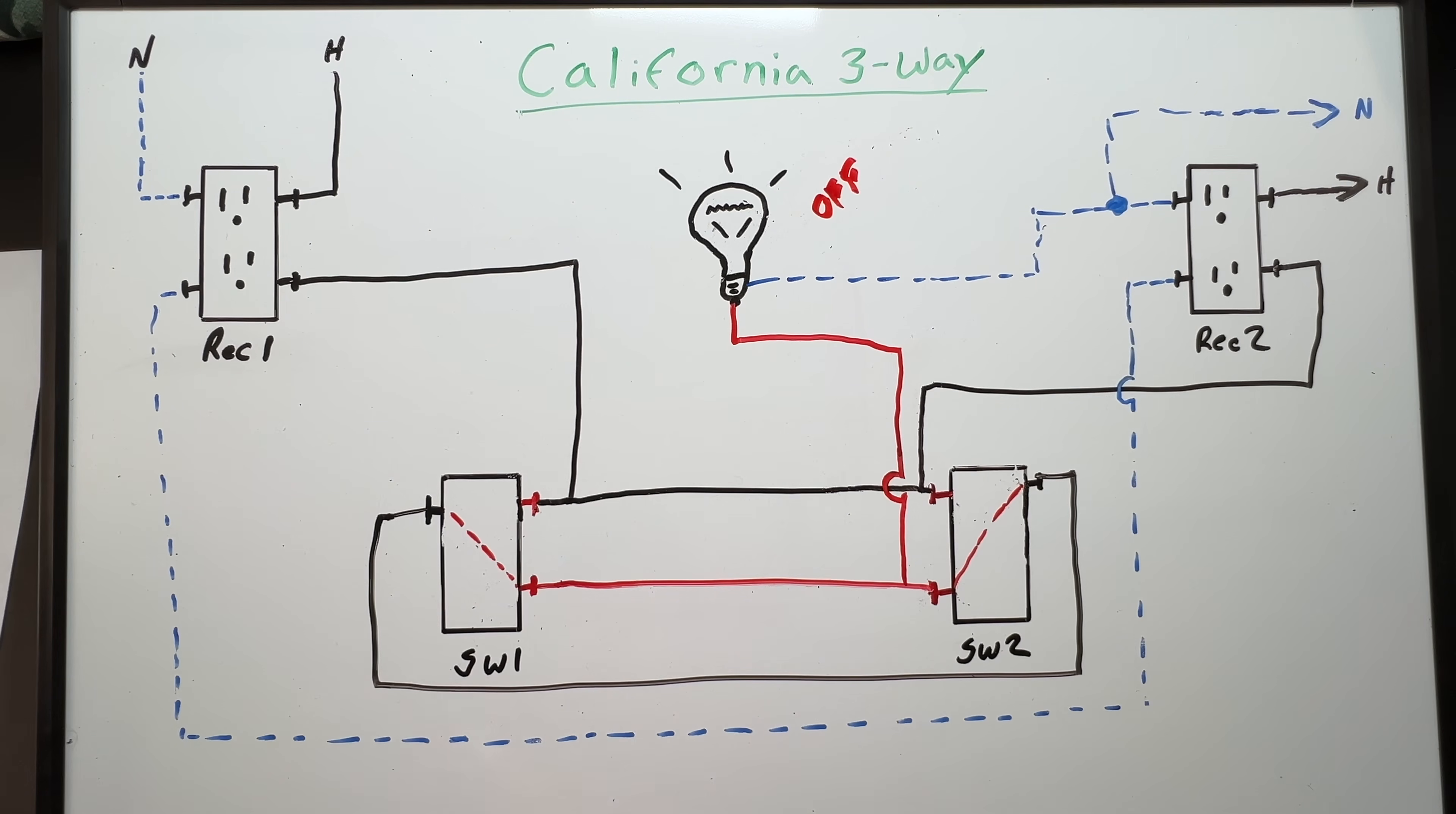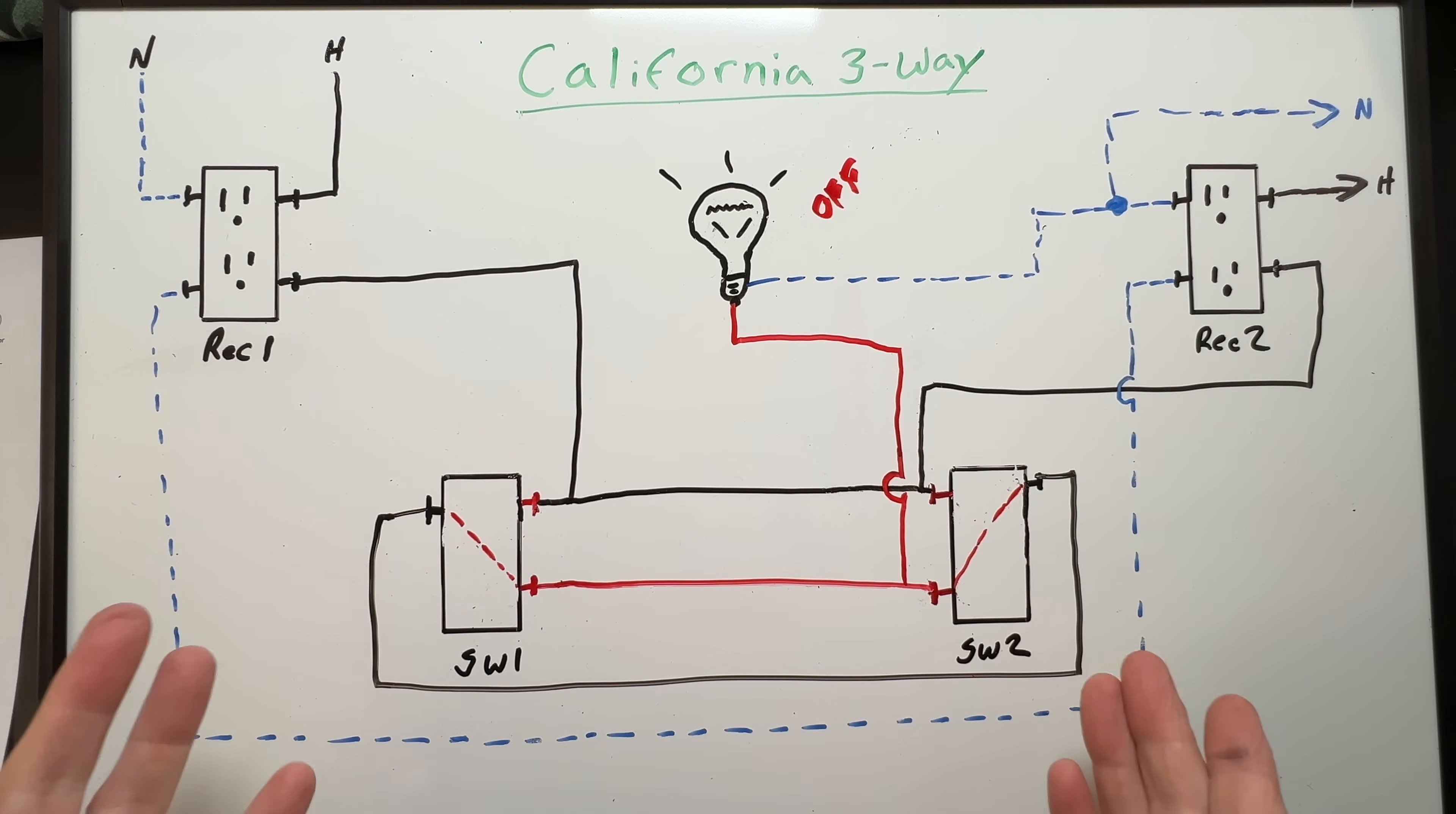As you can see with this setup even with our lights off or on it doesn't matter our power continues on the circuit onto our other receptacles and whatever might be downstream. The California three-way is a pretty clever way of wiring three-way switches but is it code compliant?